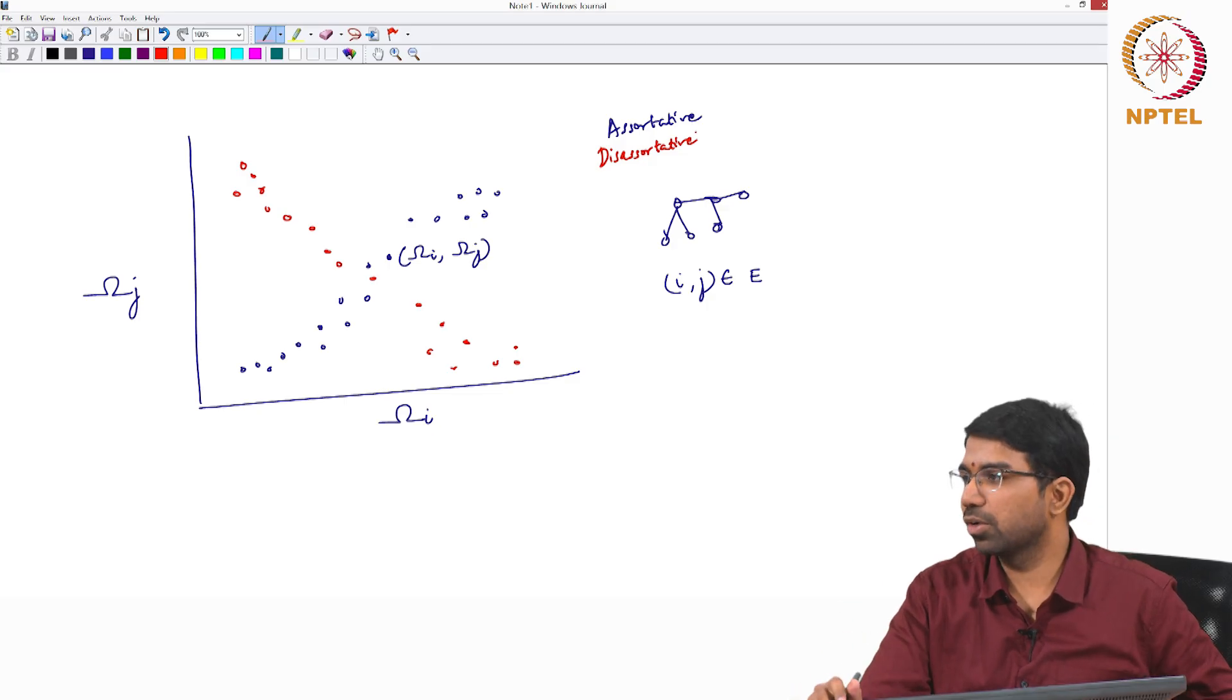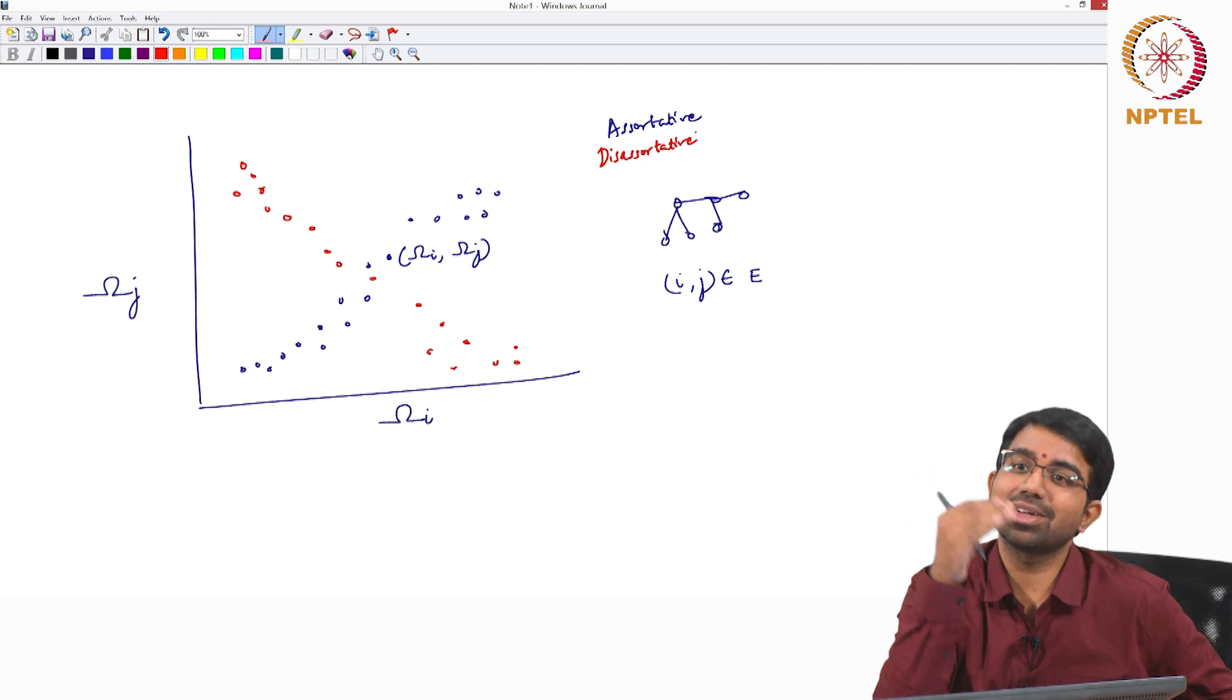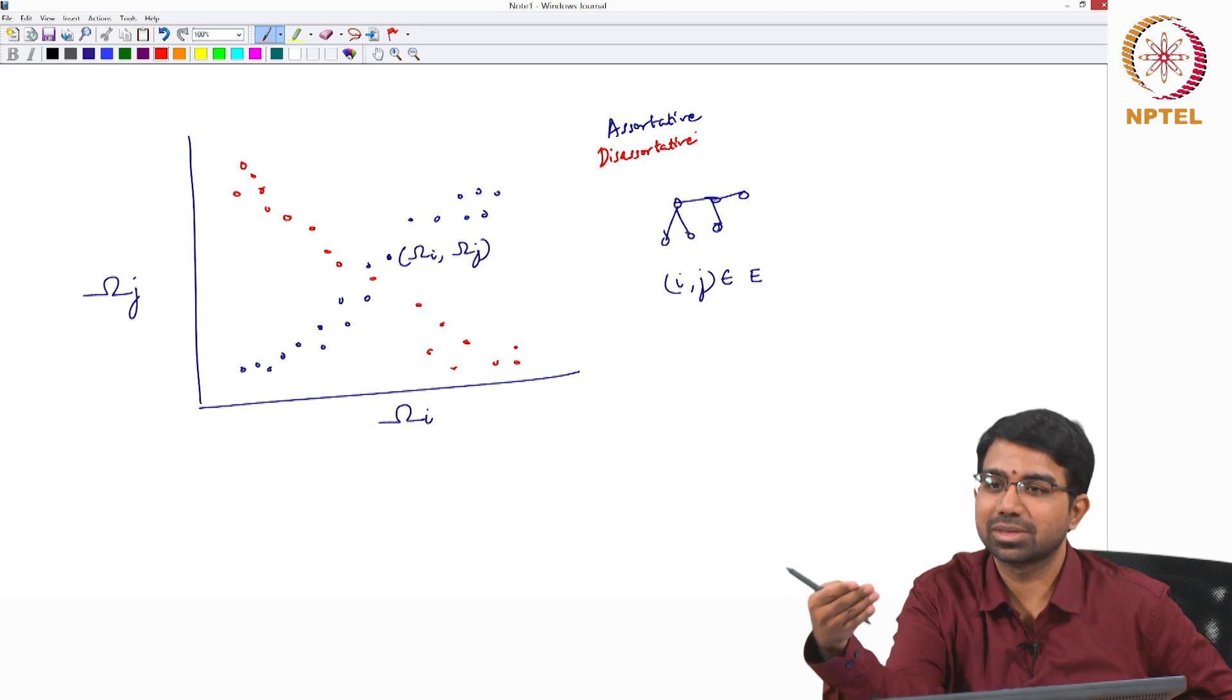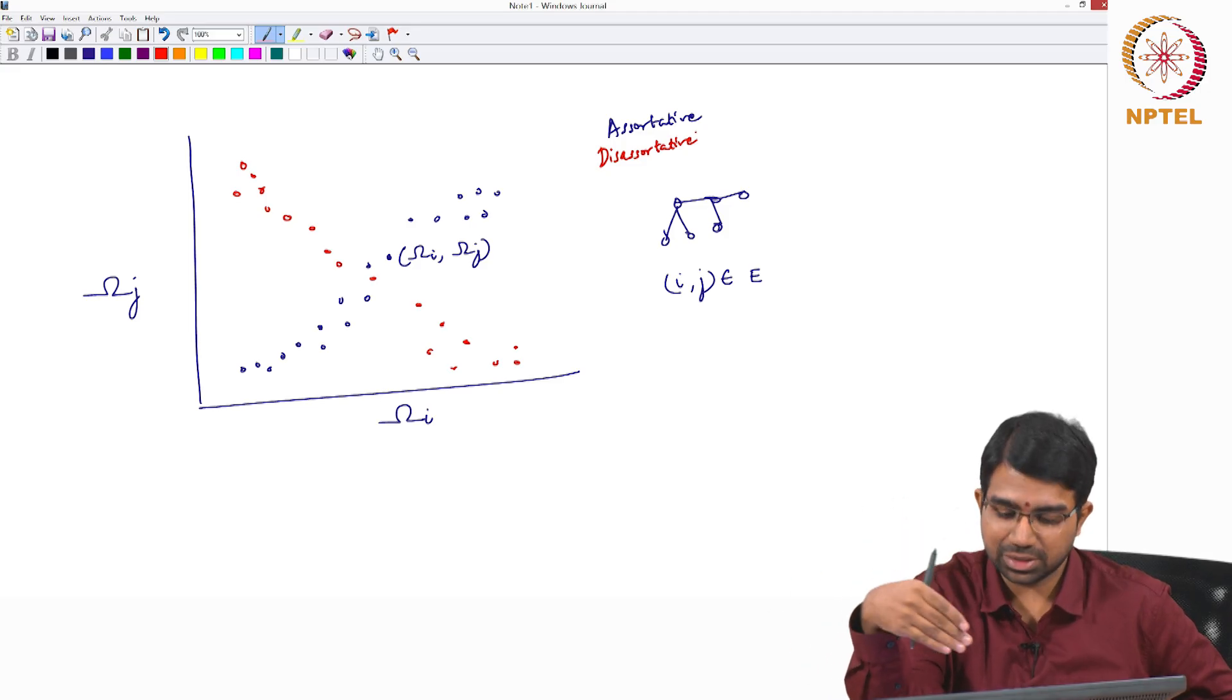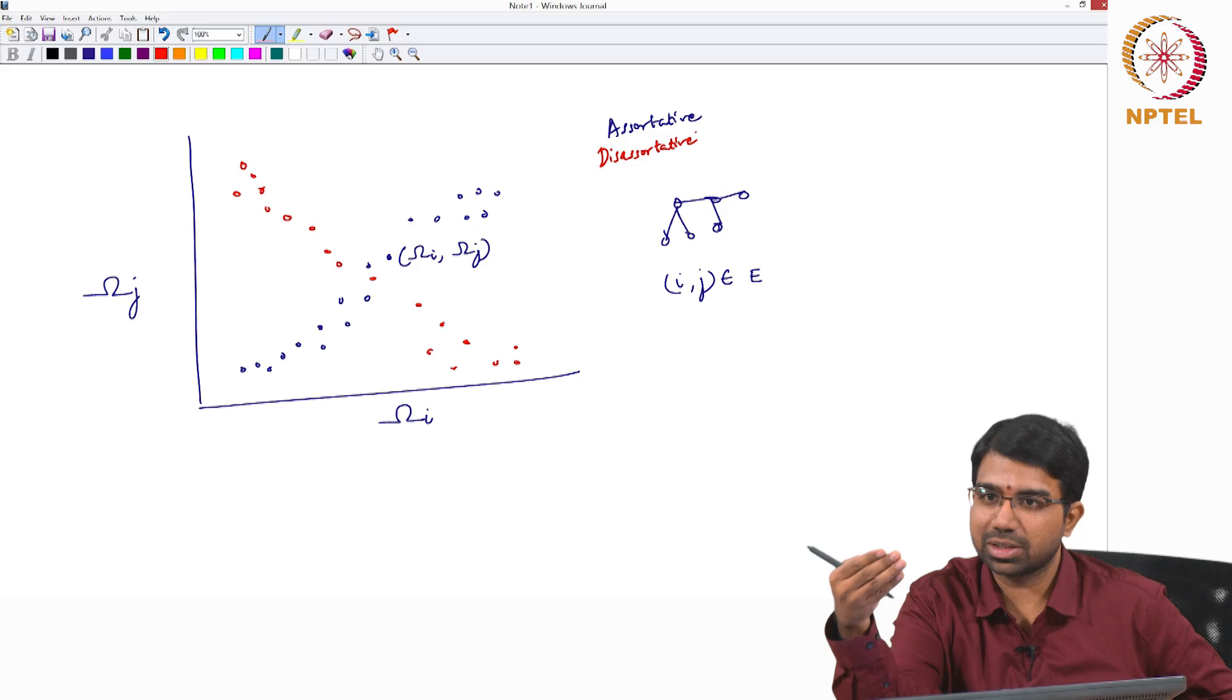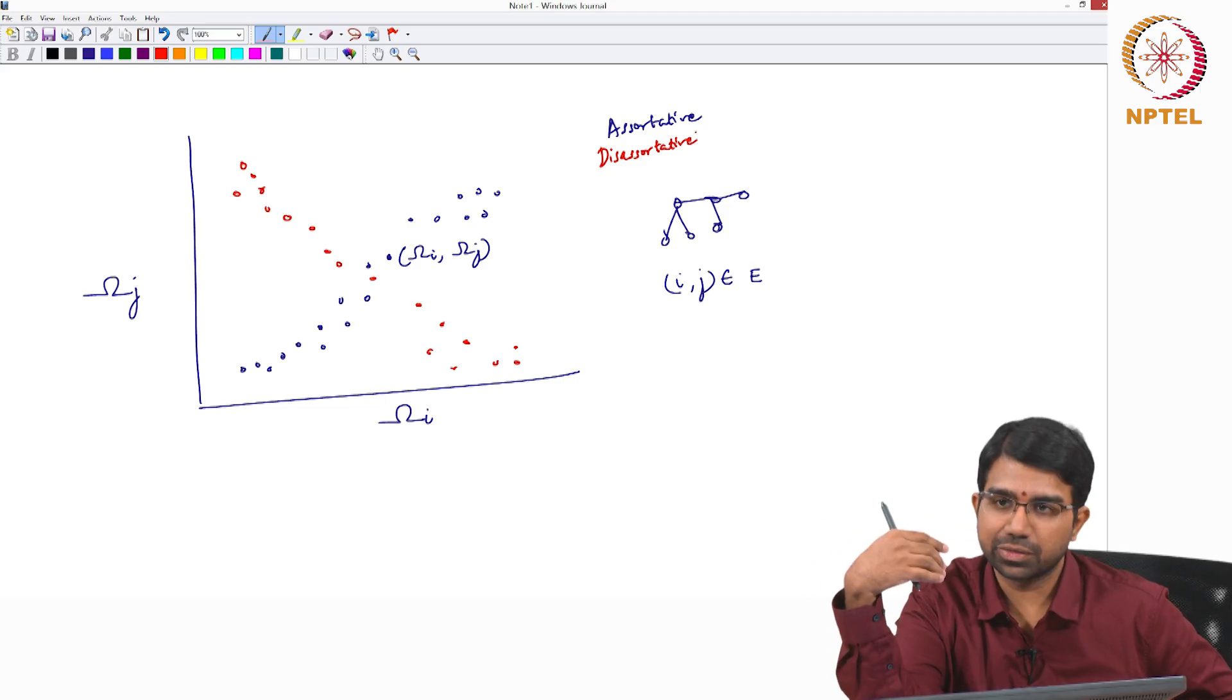You can compute some correlation coefficient, a Spearman correlation coefficient or a Pearson correlation coefficient to see what kind of correlation is there. That network is assortative on degree but disassortative on betweenness. If one statistic, one omega gives you assortative behavior and the other omega gives you disassortative behavior, fair enough.